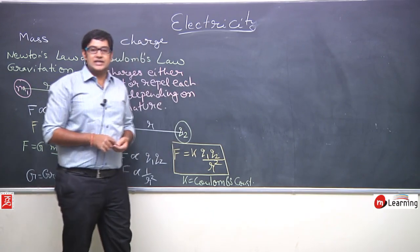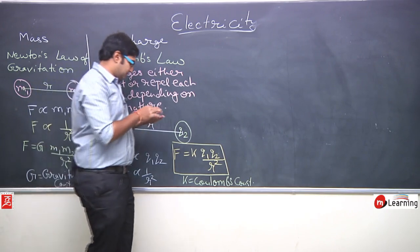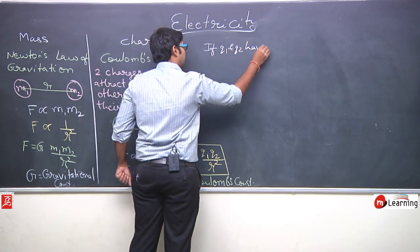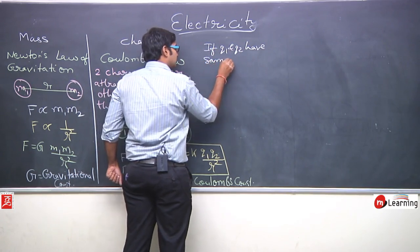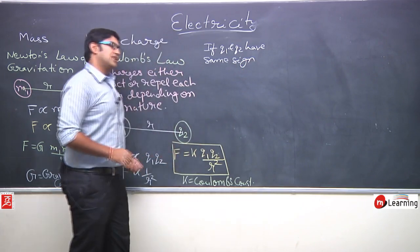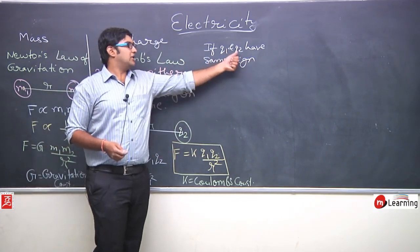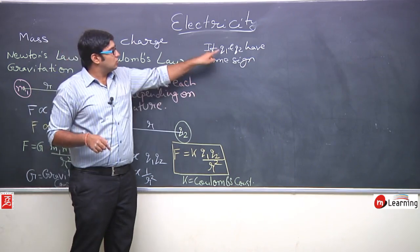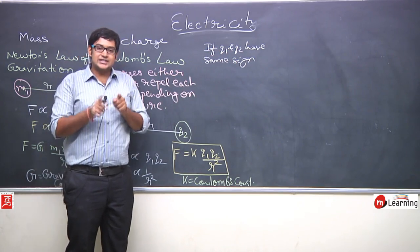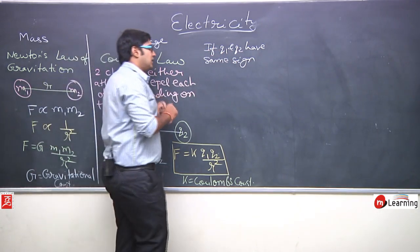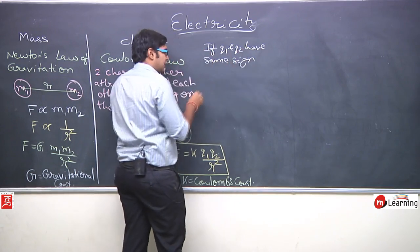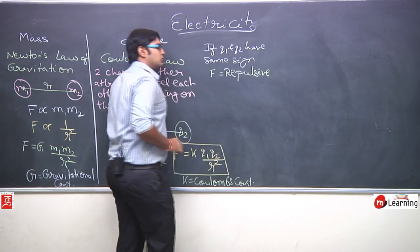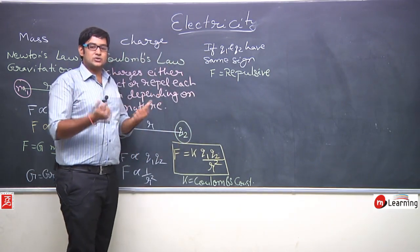When q1 and q2 have the same sign — both positive or both negative — the force will be repulsive. When q1 and q2 have opposite signs, the force will be attractive.